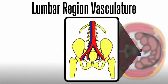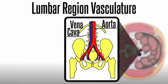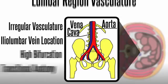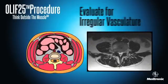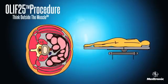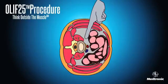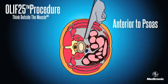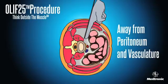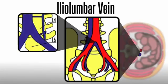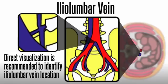Lumbar region vasculature primarily consists of the great vessels — the aorta and vena cava — and multiple segmental vessels and tributaries. Anatomical concerns include irregular vasculature, location of the iliolumbar vein, high bifurcation, and transitional anatomy. In the OLIF-2-5 procedure, look at pre-op axial MRIs to evaluate for irregular vasculature. Positioning the patient laterally with the left side up increases the size of the corridor between the psoas and aorta as the great vessels move to the right. The preferred starting position of the probe on the disc space is anterior to the psoas and away from the major vessels, or starting on the anterior portion of the psoas muscle. An OLIF-2-5 approach works away from the peritoneum and anterior vascular structures. The iliolumbar vein may be observed at the L4-5 disc space in patients with transitional anatomy; for these patients, direct visualization is recommended to identify iliolumbar vein location.